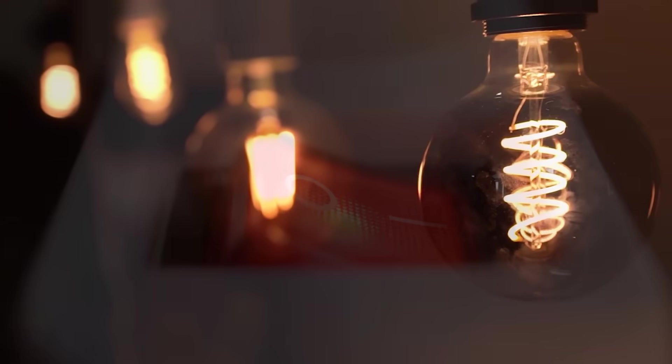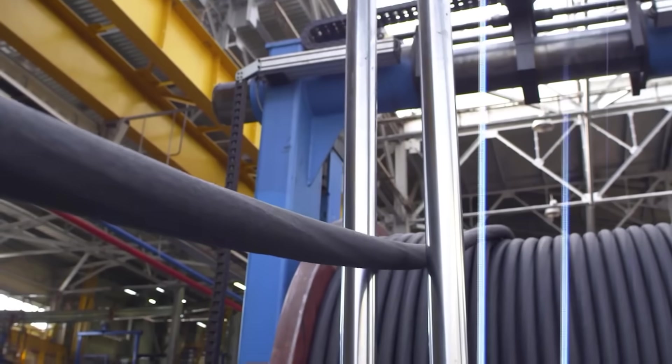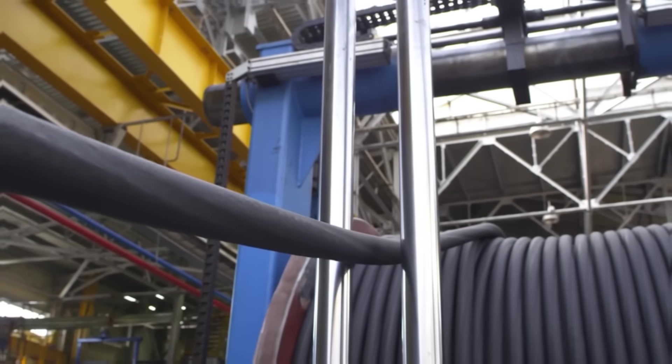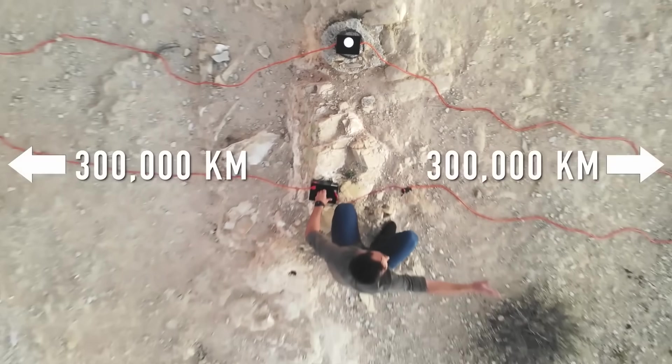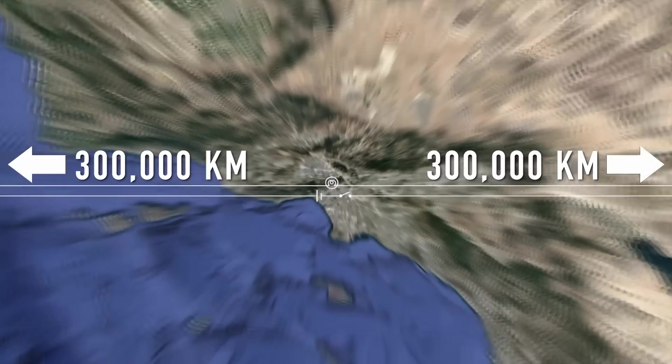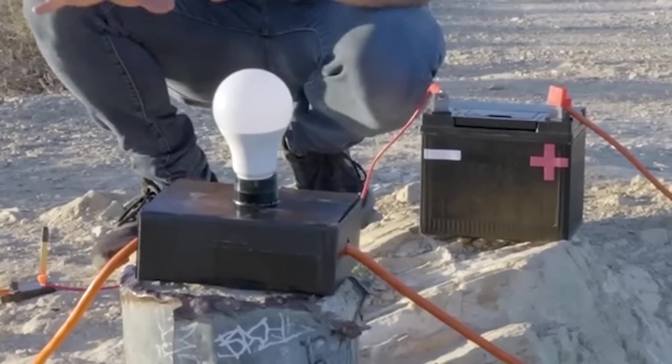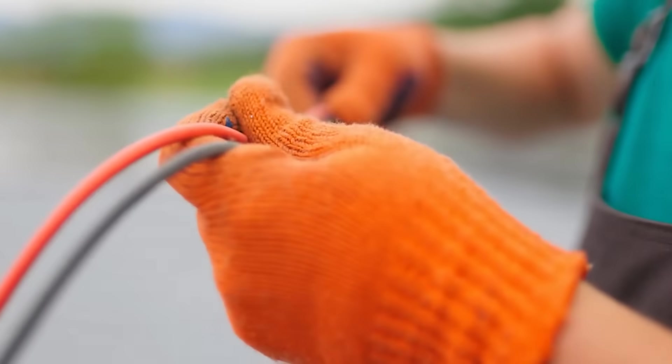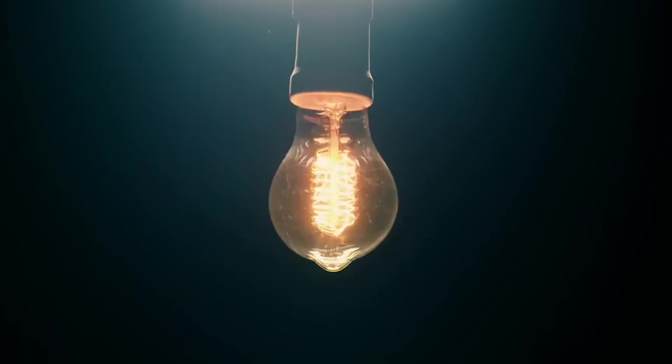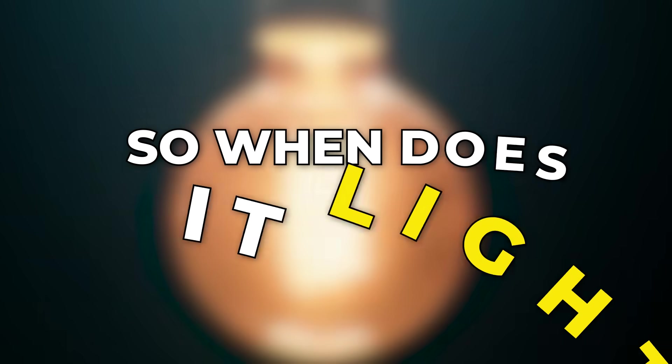A switch snaps shut, and a light should glow. Now stretch the scene to the edge of absurd. Two wires, each 300,000 kilometers long, run out and back, while the bulb sits one meter from the battery. The circuit is ideal. The wires have no resistance, and the bulb turns on the instant power can reach it. So when does it light?